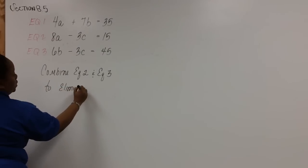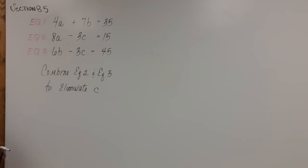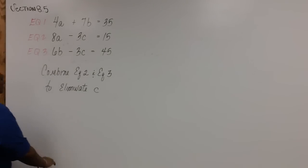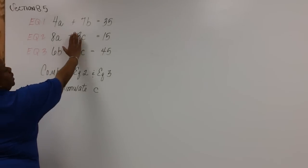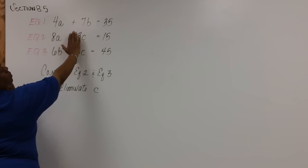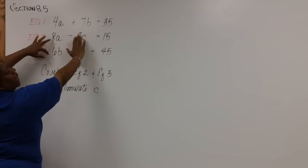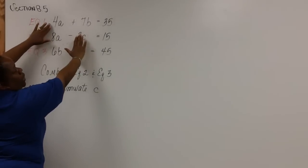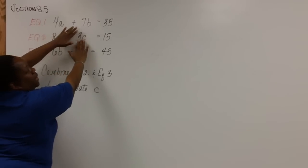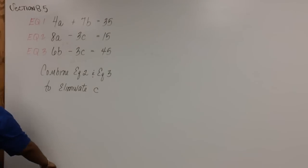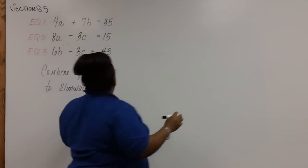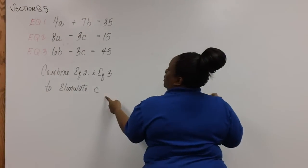And I'll tell you why. The reason you want to start off by combining these two equations is this: if you eliminate C, the only variables you're left with are A and B, which is good for us, because then we can combine it with equation one, which has A and B. So let's start off by combining equations two and three to eliminate C.